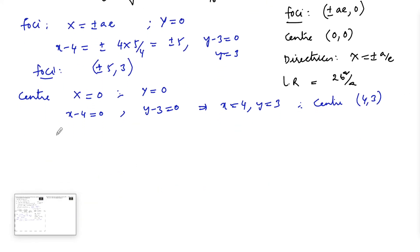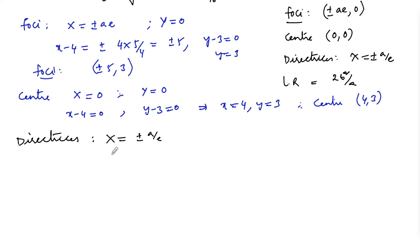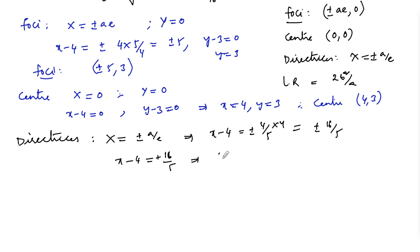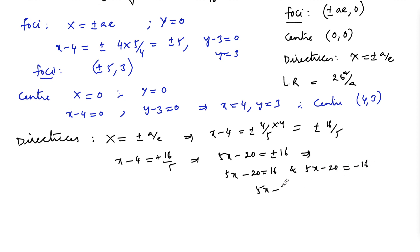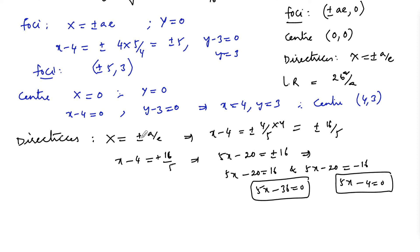For directrices: X = ±a/e, where X = x - 4. So x - 4 = ±4/(5/4) = ±16/5. Doing cross multiplication: 5x - 20 = ±16. Taking +16: 5x - 20 = 16 → 5x - 36 = 0. Taking -16: 5x - 20 = -16 → 5x - 4 = 0. These are the two equations of the directrices.